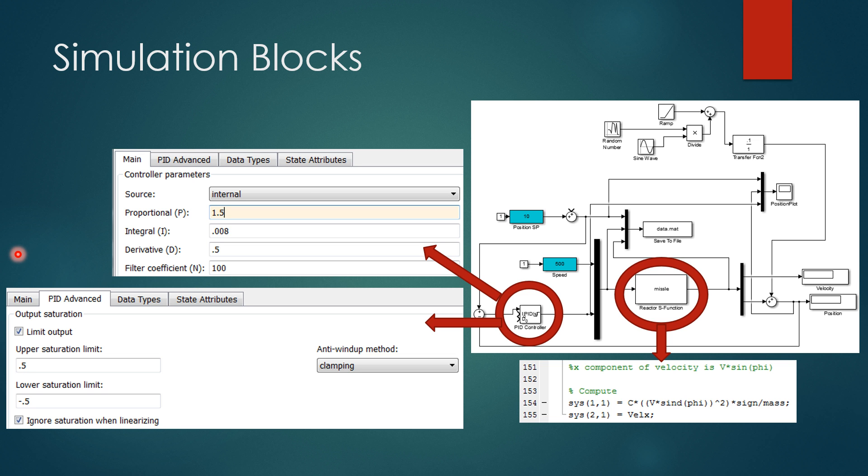Also very important was the clamping here, which kept the angles at between negative 0.5 and 0.5. This is what you call a bang-bang controller, and it was absolutely essential to the stability of our project.